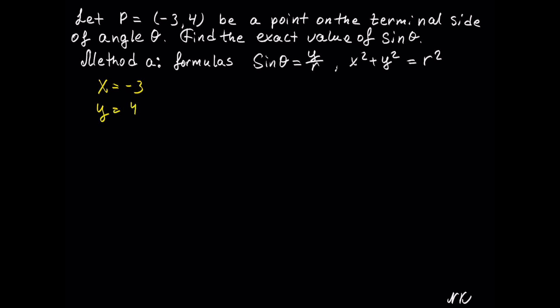In order to use the formula for sine of theta, from the point we just need to calculate r, which we can do using the formula x squared plus y squared equals r squared — similar to the Pythagorean theorem. So we substitute negative 3 for x and 4 for y: negative 3 squared plus 4 squared equals r squared.